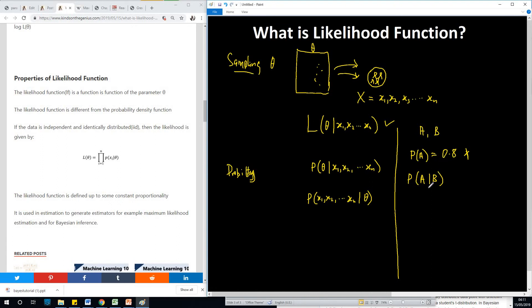So basically that is what we are talking about. So if you have probability of A given B, then this is probability. But now if you invert this and say P(B given A), this is now likelihood.